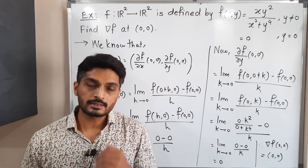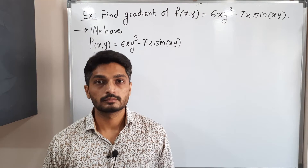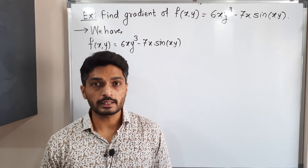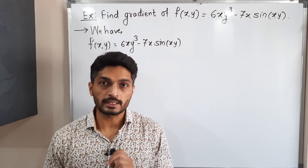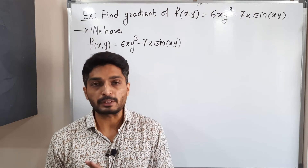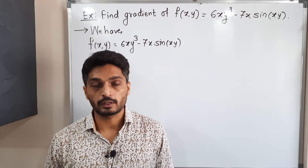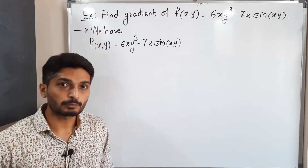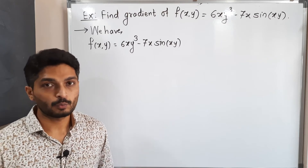Let us discuss a second example. In this second example we have a function f which is a function of two variables x and y, and we have to find its gradient. They have not mentioned a specific point, so we simply find ∇f. The function is already written. We will find ∂f/∂x first and then ∂f/∂y.